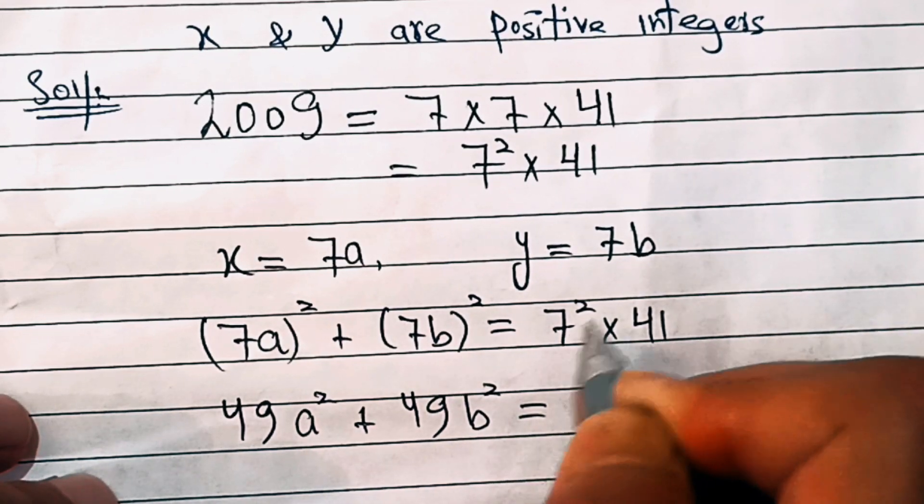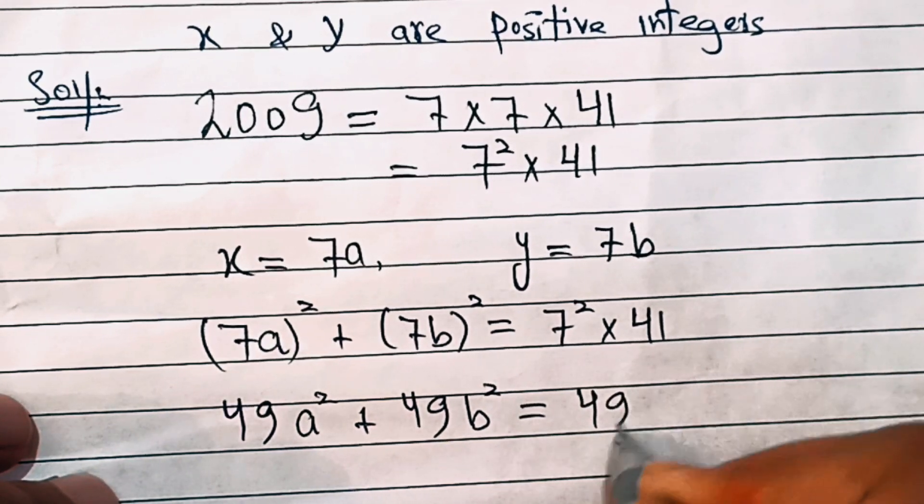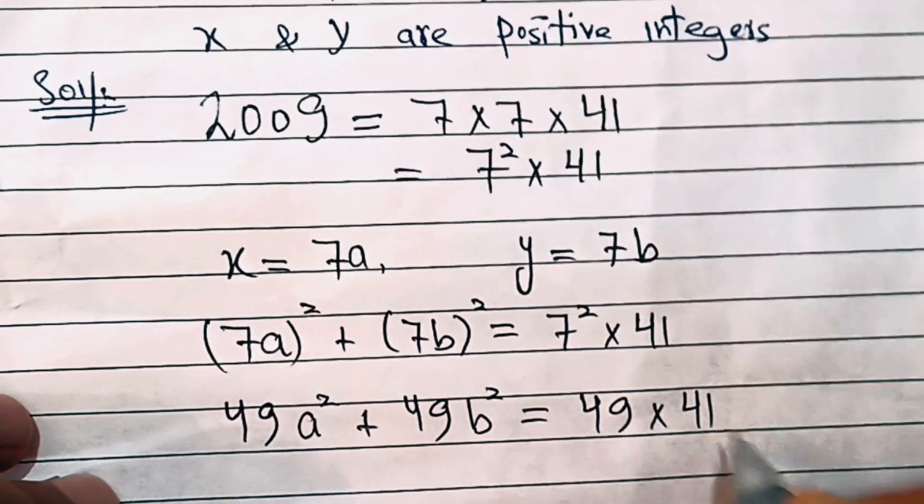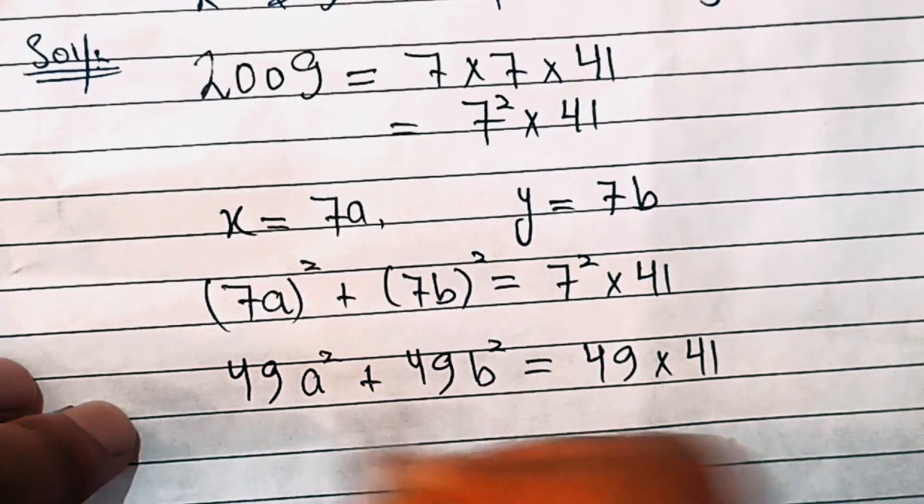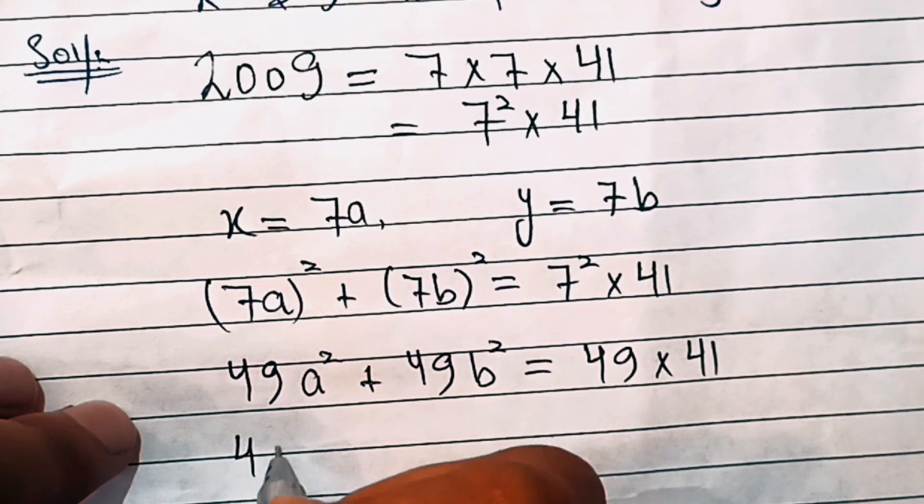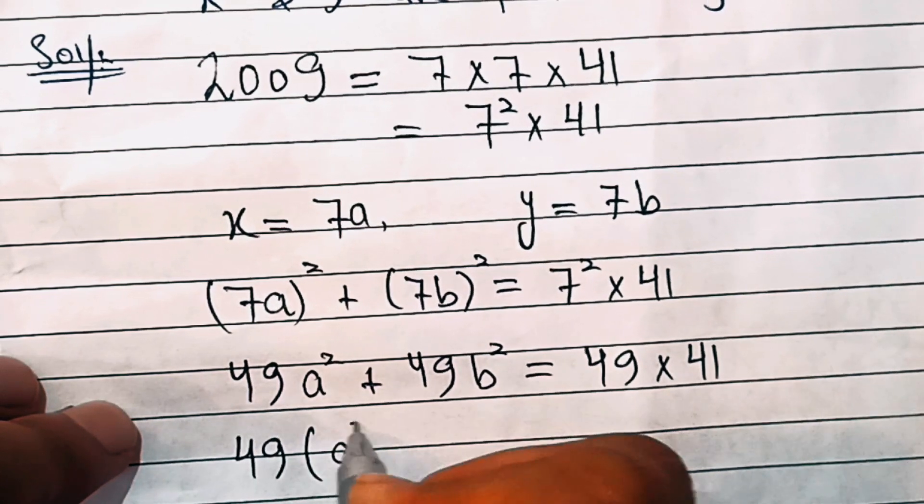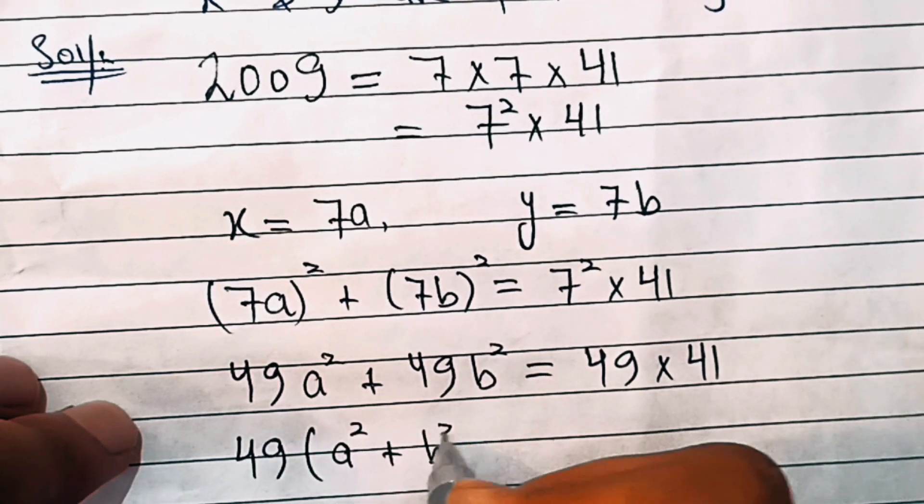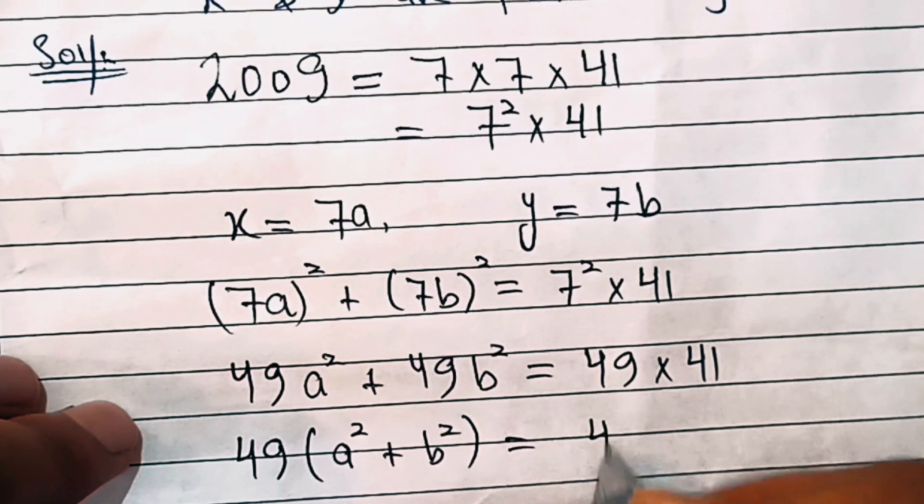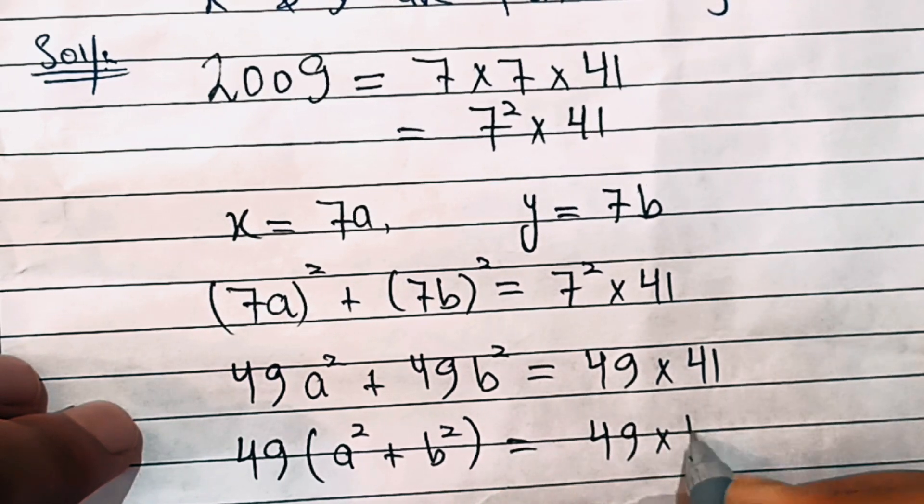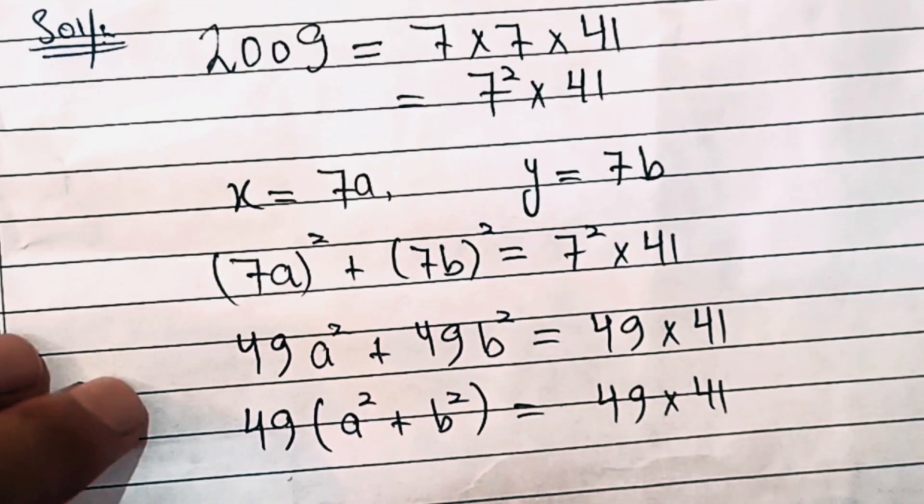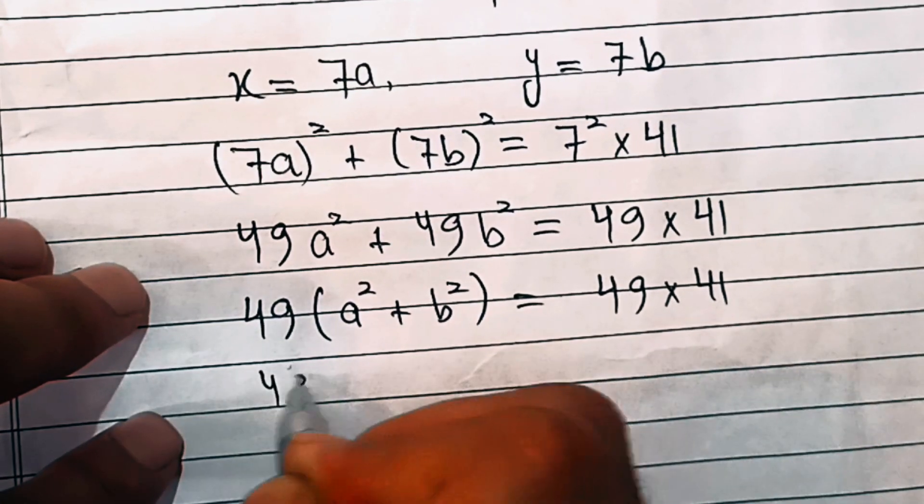That is 49 a square plus 49 b square equal to 49 times 41. Now let's take out 49 common, so that is 49 times a square plus b square equal to 49 times 41. Now let's divide both sides by 49.